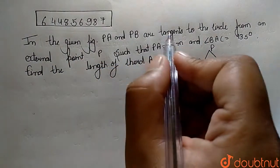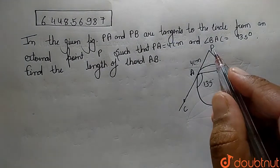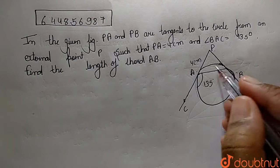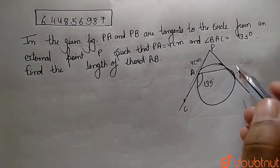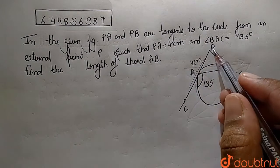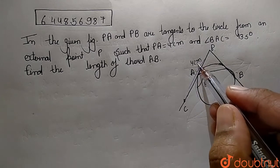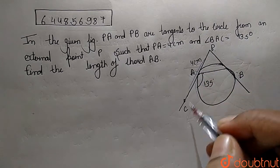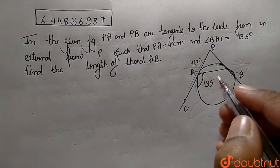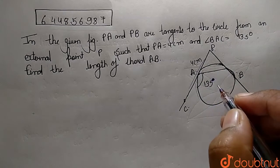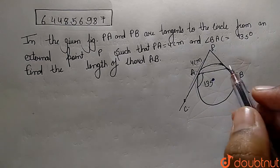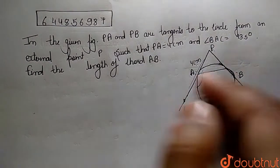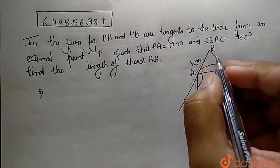The question is: in the given figure, PA and PB are the tangents from point P to the same circle. The value of PA is 4 centimeters and the angle BAC is 135 degrees. We have to find the length of the chord AB.